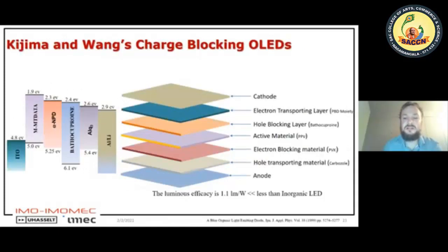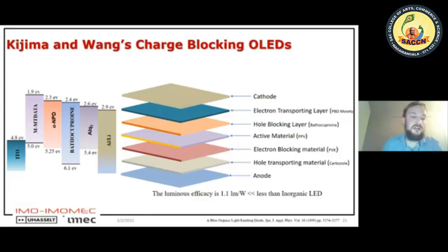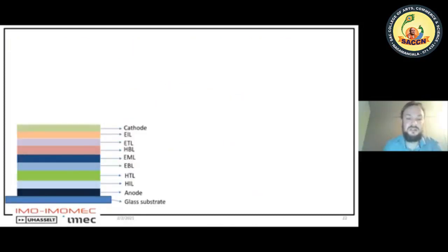By integrating even more layers — an extra hole blocking layer and an extra electron blocking layer — you have several layers on top of each other, achieving a luminous efficacy of about 1.1 lumen per watt. This is a lot less than inorganic light emitting devices, but by optimizing the layers over the last 20 years, significant improvements have been made.